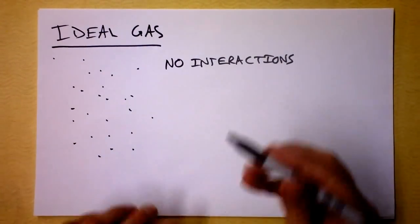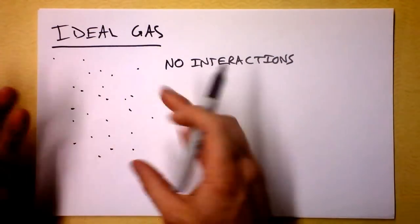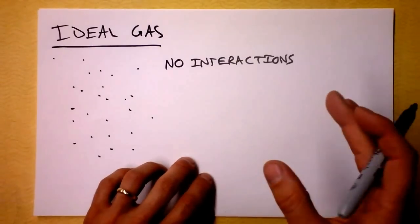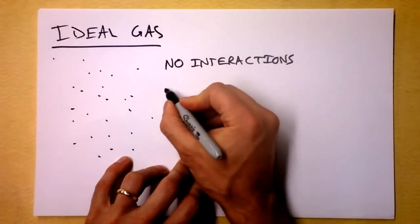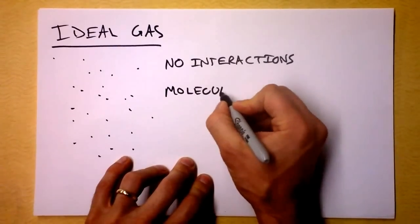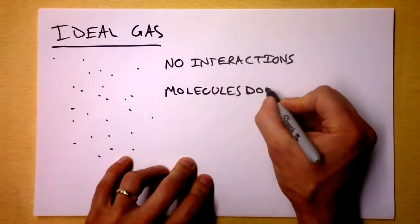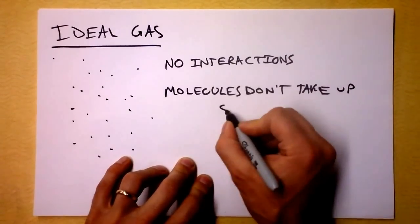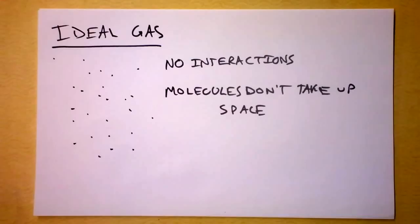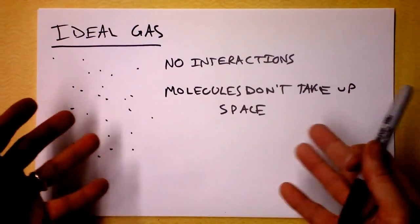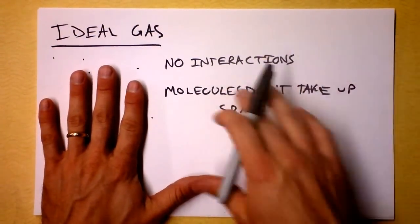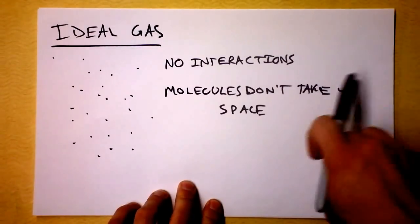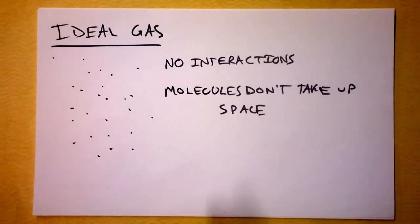And not only that, but not only do these particles not really interact with each other, I mean they're going to hit the walls but they won't really hit each other, but also they don't take up any space at all. Molecules don't take up space. So this lets us do all kinds of approximations. You know that the physical world is incredibly complicated, but we can start understanding gases by disregarding all interactions between the gas itself and saying that the molecules take up no space at all.